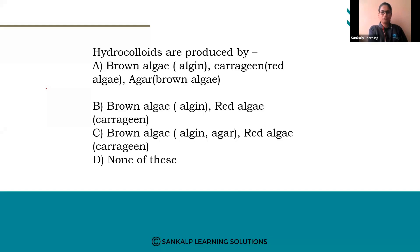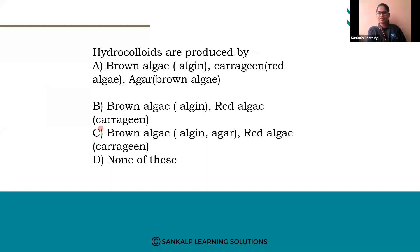Most students answered option C, but option B is the right answer. Brown algae produces algin, and red algae produces carrageenan. Option B — brown algae algin, red algae carrageenan — is the right answer.